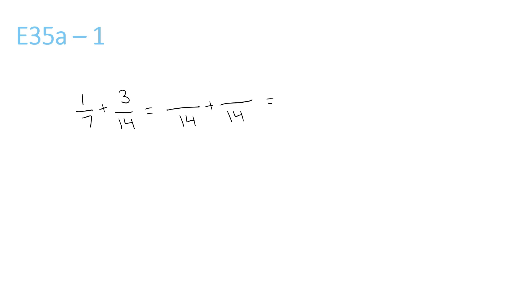The first one, we have to find what 7 and 14 both go into, which is 14. 7 times 2 is 14, so we have to times the top number by 2. 1 times 2 is 2. We just bring the 3 over 14 over here. Do 2 plus 3 is 5 over 14.